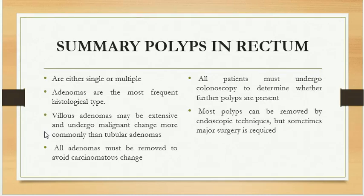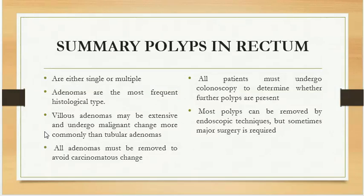To summarize polyps in the rectum: they are either single or multiple. Adenomas are the most frequent histological type. Villous adenomas may be extensive and undergo malignant change more commonly than the tubular variety. All adenomas must be removed to avoid carcinomatous change, as adenoma-to-carcinoma change is a definite pathway for invasive cancers of the rectum. All patients must undergo colonoscopy to determine whether further polyps are present more proximally. Most polyps can be removed by endoscopic technique, but sometimes major surgery is required.